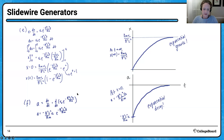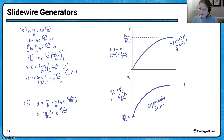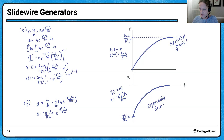For acceleration as a function of time, take the time derivative of the velocity function. The result is a = −(B²L²v₀ / mR) · e^(−B²L²t / mR). Plugging in t = 0 gives the initial acceleration, and as t → ∞ the acceleration goes to zero. This is the same approach used for an object falling through air and reaching terminal velocity: first find velocity as a function of time, then derive acceleration and position from it.